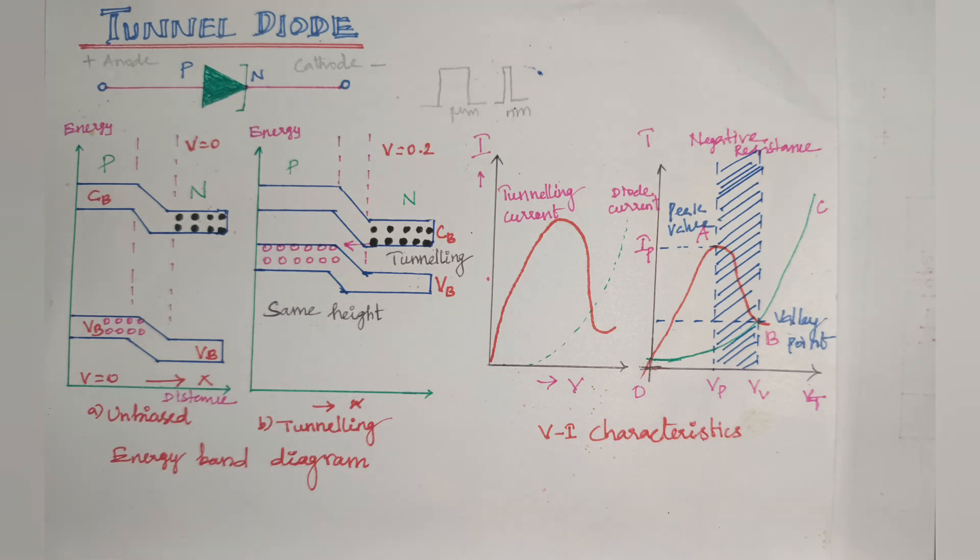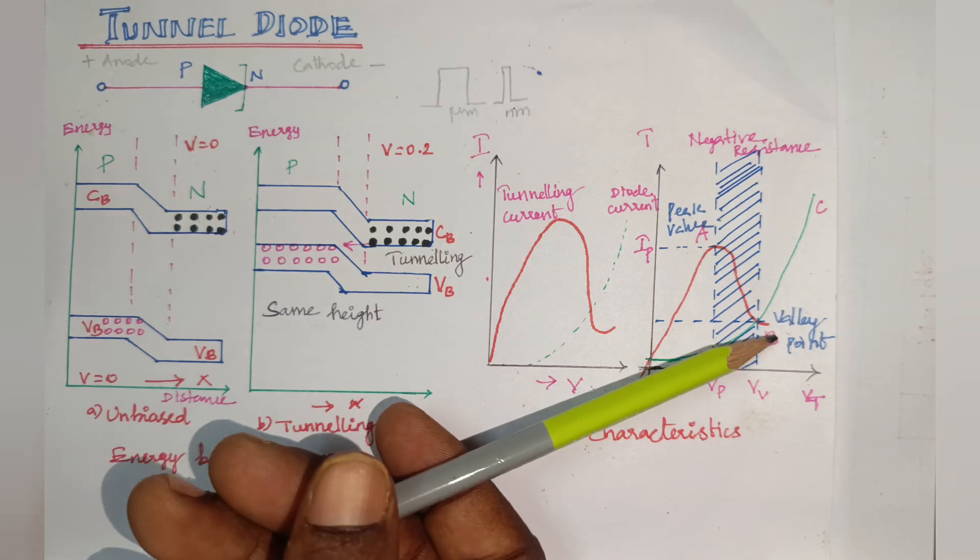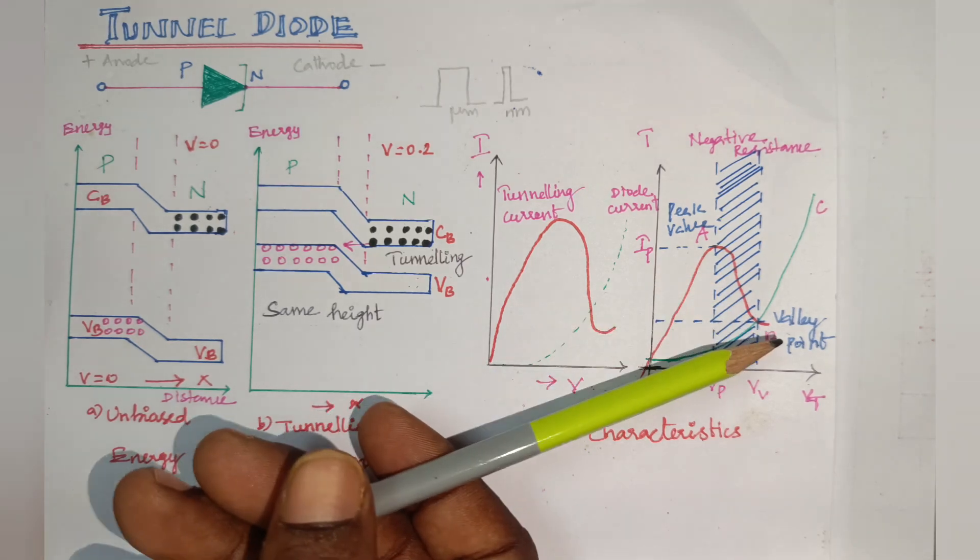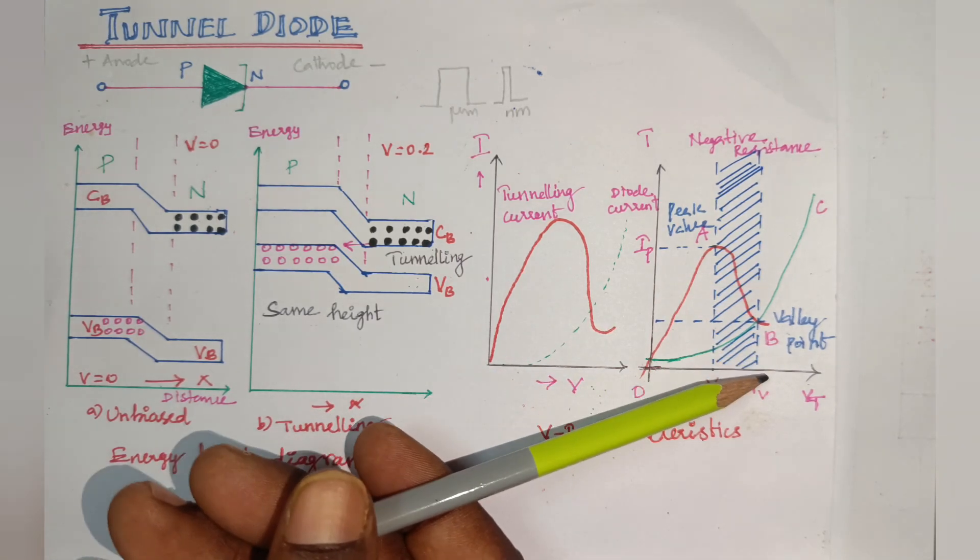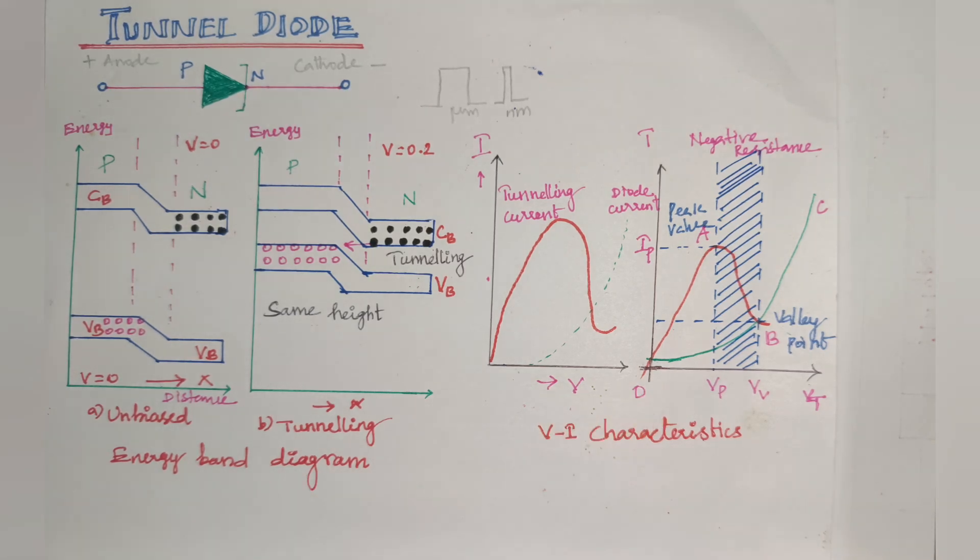So heavily doped P-type and N-type are used. Now the PN junction exhibits negative resistance between two values of forward bias. One is the peak point, the other is the valley point. Between these two, there is negative resistance.